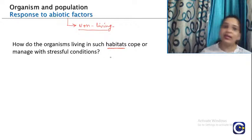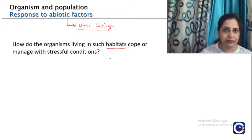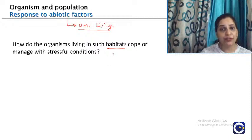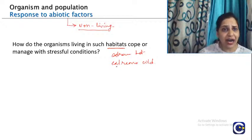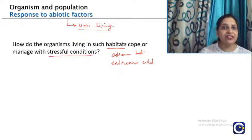Biotic factors are the living factors like plants, animals, and microorganisms. They have a continuous interaction with abiotic factors in the environment to sustain a self-sufficient system. The question is: how do organisms living in different kinds of habitats manage, since the habitat is not the same for all organisms? If we go to different altitudes, latitudes, or temperate zones, there is variation in temperature and precipitation, ranging from extreme heat to extreme cold.